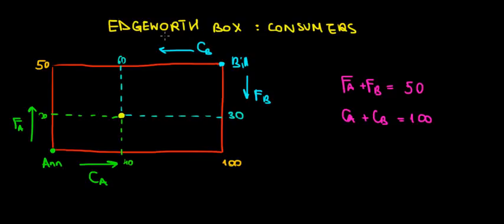We will have a simple case where we have two consumers that can trade two goods, food and clothing. And because we have two consumers and we show it on the same graph, we will have two origins on this rectangle. So let's see how that works out.